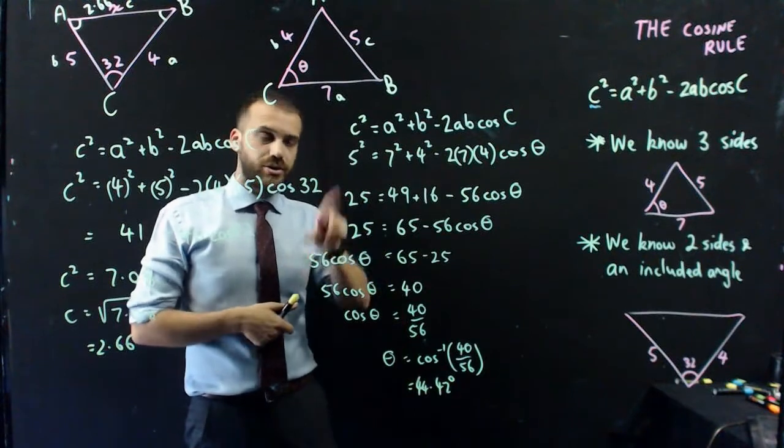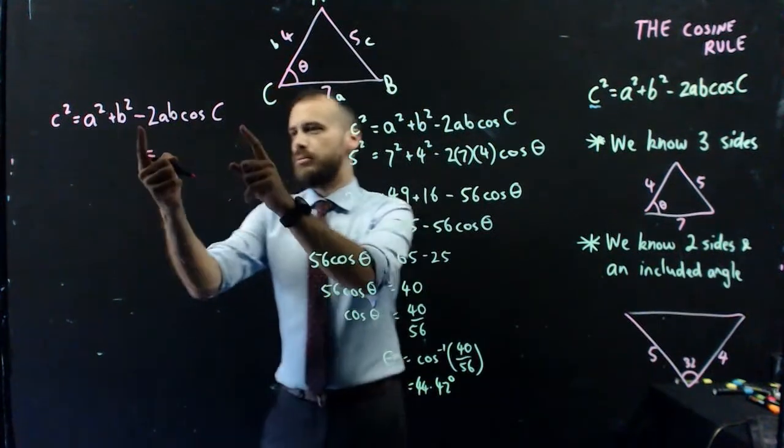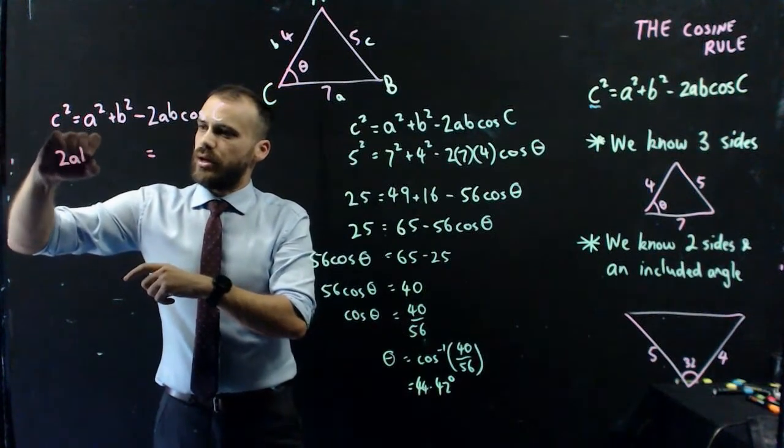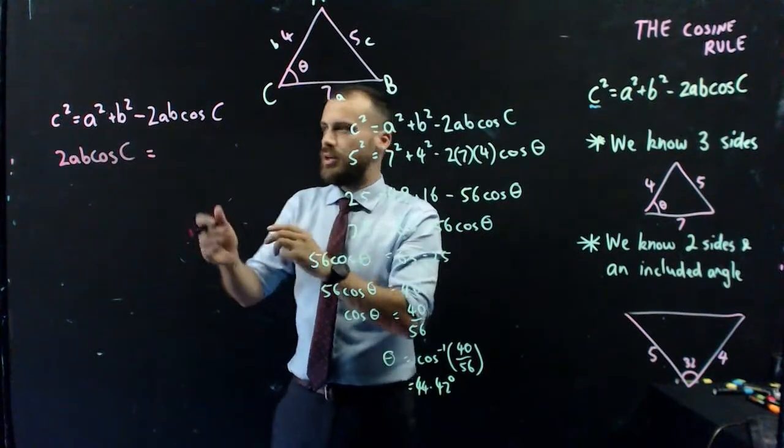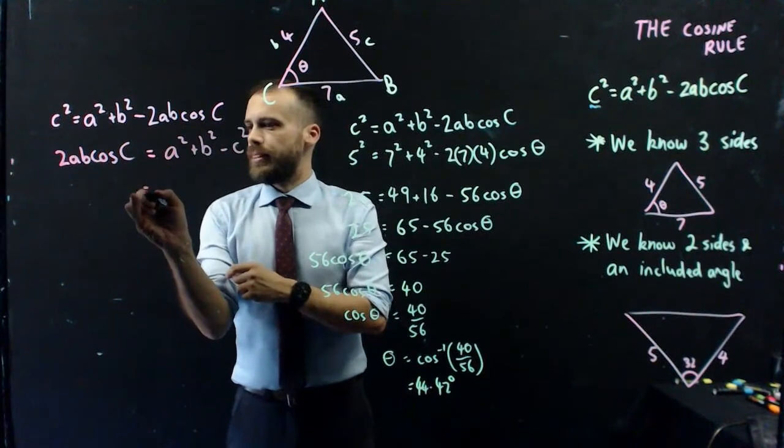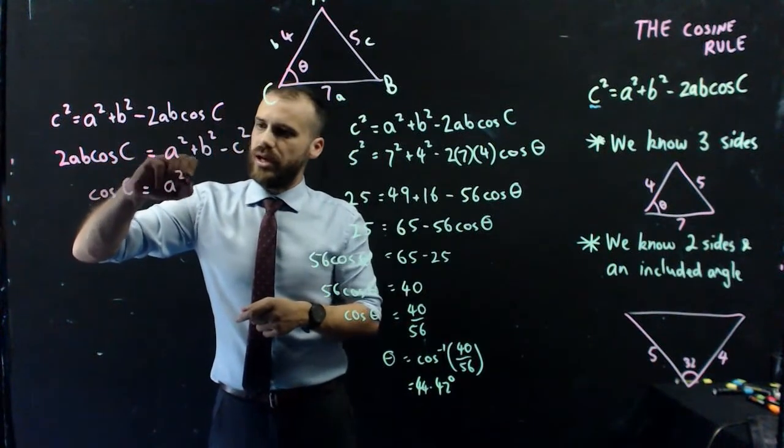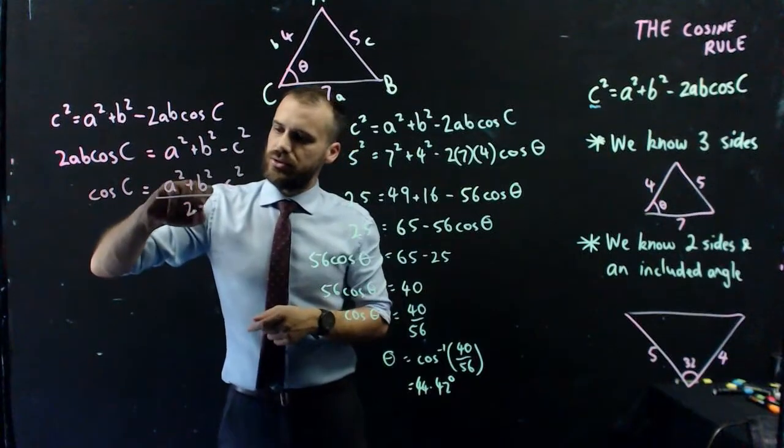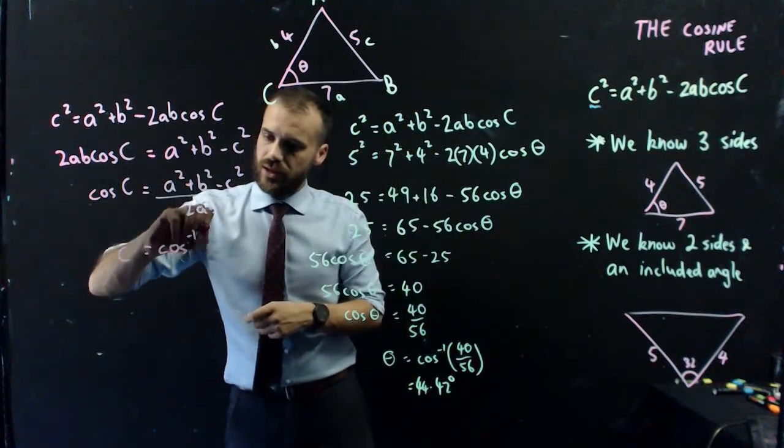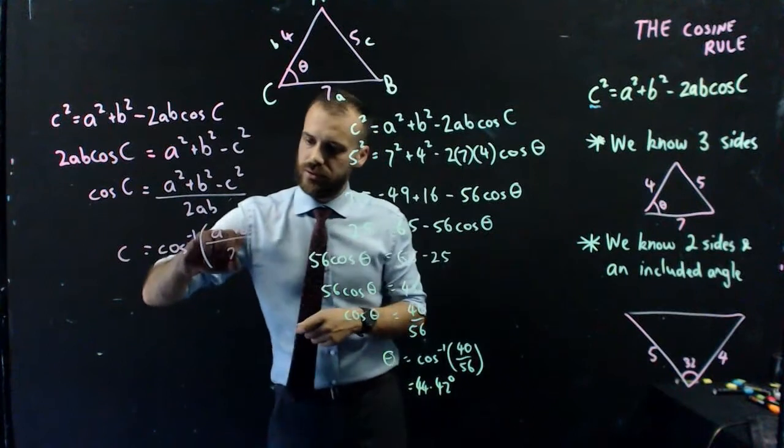There is another way to do that, which I'll show you real quick. So I'll just rearrange the whole thing before putting anything in. So I'm going to move negative 2ab cosc to the left-hand side to where the c squared is. So 2ab cosc. That turns it into a positive. And I'll move this c squared over to here and that'll make it a negative. So a squared plus b squared minus c squared. Now I'll divide everything by 2ab. So cosc equals a squared plus b squared minus c squared over 2ab. And now I'll say that c is equal to shift cos negative 1 a squared plus b squared minus c squared over 2ab.